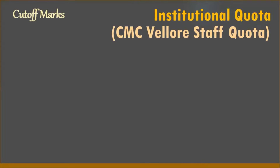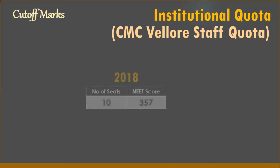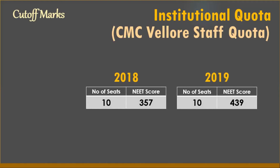Now let's look at the cutoff marks category wise. For the institutional quota or CMC Vellore staff quota — 10 seats available — the cutoff in 2018 was 357 marks, and in 2019 it was 439 marks. For most categories, the cutoff has increased from 2018 to 2019, which is the general trend across Tamil Nadu. Across almost every category, whether government quota or private colleges, the cutoff has increased by close to 100 marks on average.